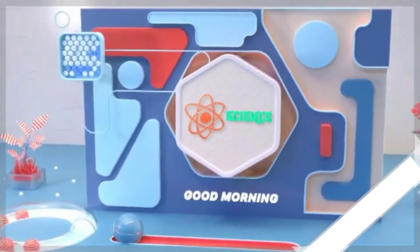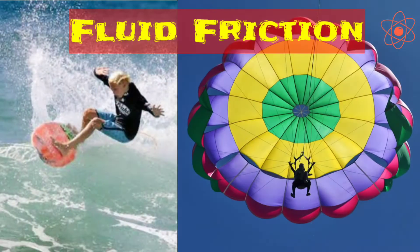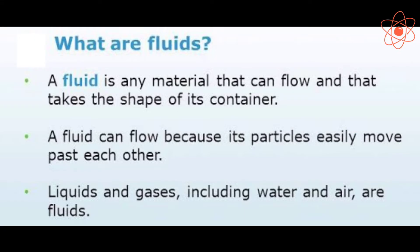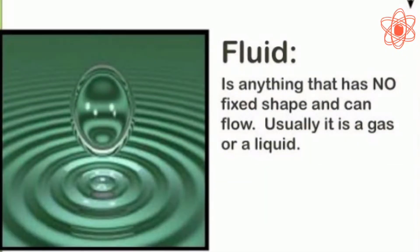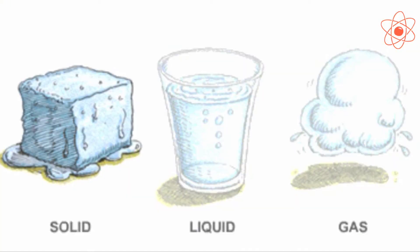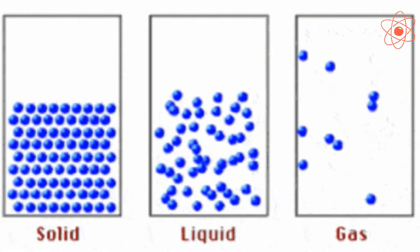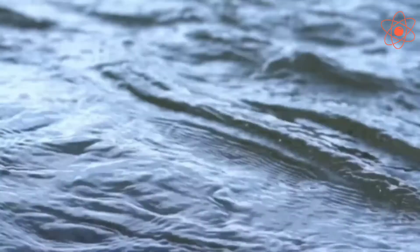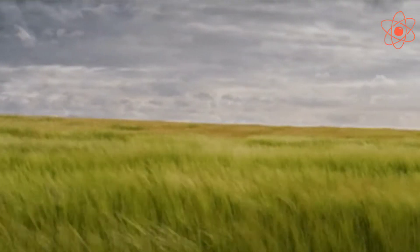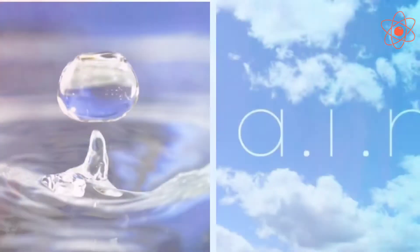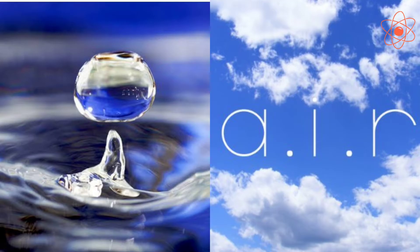Welcome back, dear students. Now we will learn about fluid friction. Before we describe fluid friction, we should know the meaning of the term fluid. Fluids are those substances which are able to flow easily — they have no fixed shape. That is why liquids and gases are fluids, as they can flow easily. The most common liquid around us is water, and the most common gas around us is air, so water and air are the most common fluids.